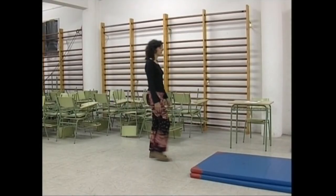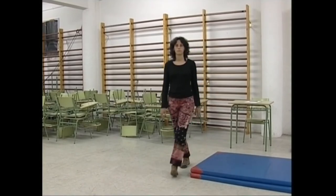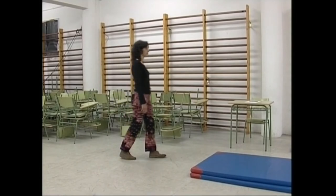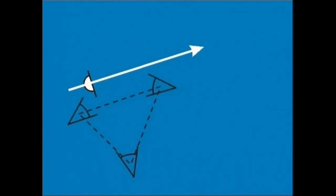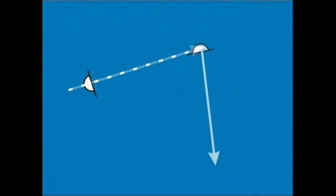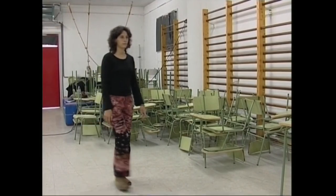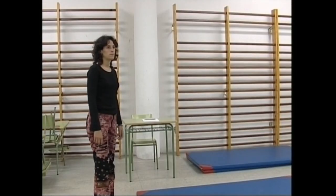Ikus dezagun orain aktorearen ibilbide ez-erregular bat, eta gero aztertu egingo dugu. Aktorea ezkerretik eskuinera dabil. Gelditu egiten da, eta kameraren eskuin aldera behatzen du. Honaino, lehen mugimendua. Ibilbidean, ekintzaren ardatz bat erabaki dezakegu. Ondoren, begirada kameraren eskuin aldera zuzendu du, horra hor beste ardatz bat. Gero, ibiltzen jarraitu du. Norabide aldaketa bakoitzari triangelua ezar diezaiokegu. Honela, ikusiko duzuen bezala, aktorearen mugimendu guztiak jaso ditzakegu ardatza zeharkatu gabe, eta pantailan bere mugimenduaren jarraipena mantenduz.